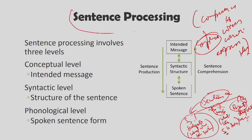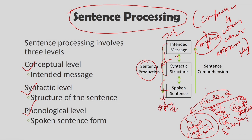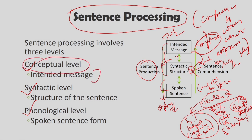Psycholinguists suggest that each sentence has three levels of processing: the conceptual level, the syntactic level, and the phonological level. Sentence production starts with an intended message, then syntactic conversions, then spoken sentences — first you think, then apply grammatical rules, find the pronunciation, and then speak. In sentence comprehension, we first understand the spoken speech, then break it into its constituents — who is the subject, what is the verb, what is the object — and from there extract the intended message.